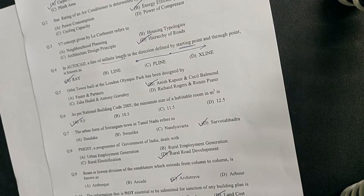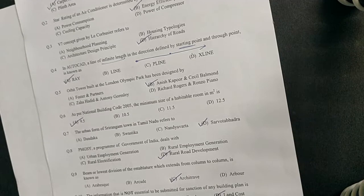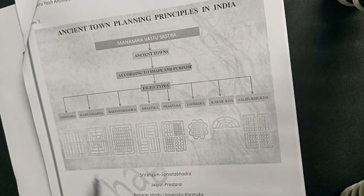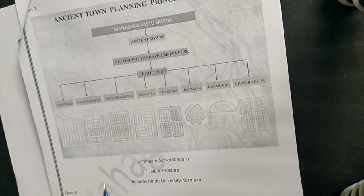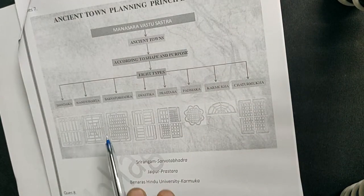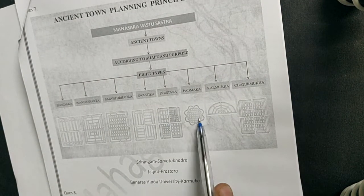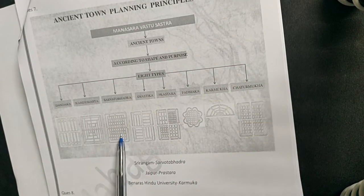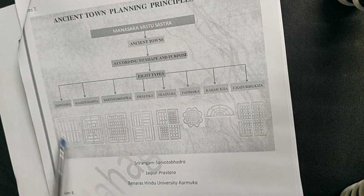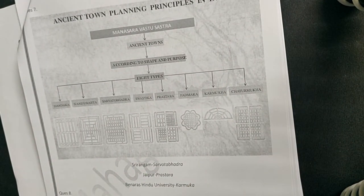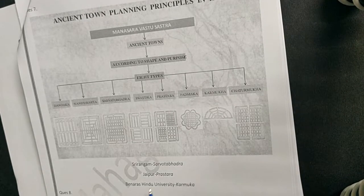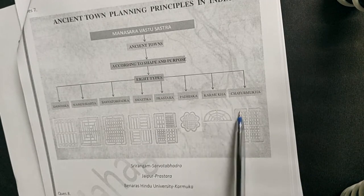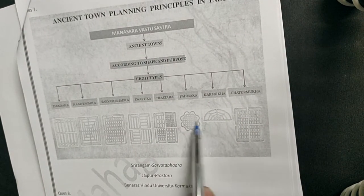The next question: the urban form of Srirangam town in Tamil Nadu refers to which of the following? There are 8 types of ancient town planning organization: Dandaka, Nandevrata, Sarvato Bhadra, Swastika, Prastara, Padmaka, Karmoka, and Chaturmoka. Srirangam was of the Sarvato Bhadra style. Jaipur follows Prastara because of the nine-squares logic, and Banaras Hindu University is of Karmoka style — where the river flows alongside.